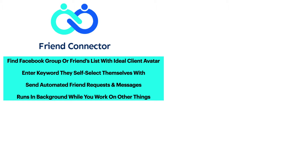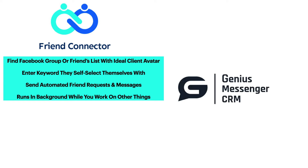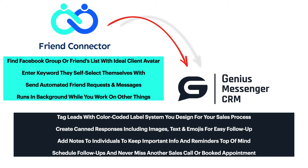After those requests go out, instead of letting conversations get lost in Facebook Messenger, we're going to put them into Genius Messenger CRM, which works right over Facebook Messenger. You'll be able to tag your leads with a color-coded label system. You'll be able to create canned responses with all your saved scripts right there, so you'll never lose a conversation.